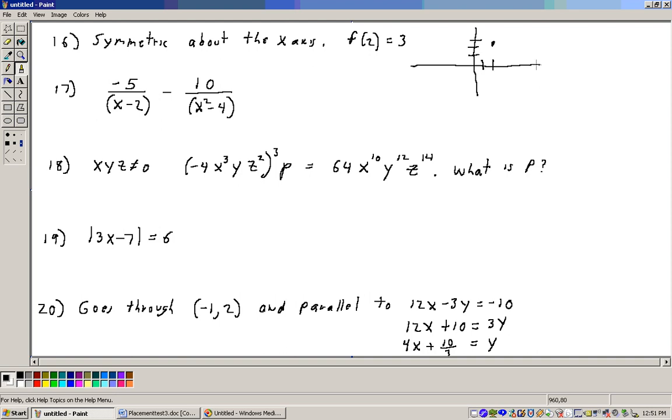If it's symmetric about the x-axis, that's this axis, that means there will be a point exactly the same distance away on the opposite side of the x-axis. So that means that there will be a point at 2, negative 3. Or in function notation, we would say that f of 2 is equal to negative 3. And that would be the right answer.